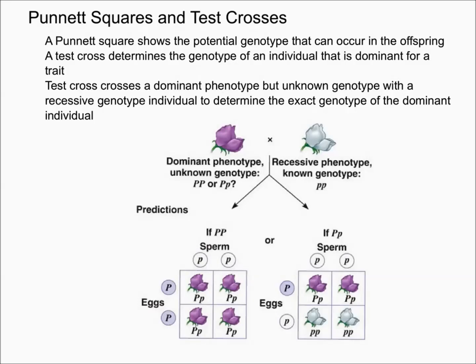Now let's talk about what test crosses are. A test cross determines the genotype of an individual that is dominant for a trait. In this example, purple is the dominant phenotype. With the purple flower, you don't know what the exact genotype is — so it could either be homozygous dominant or heterozygous.